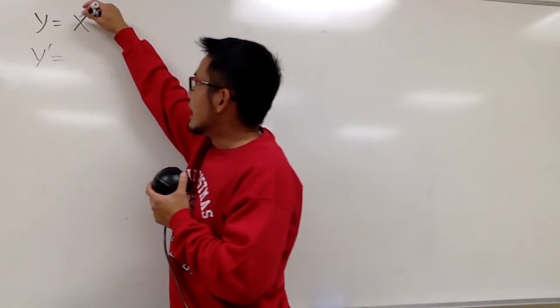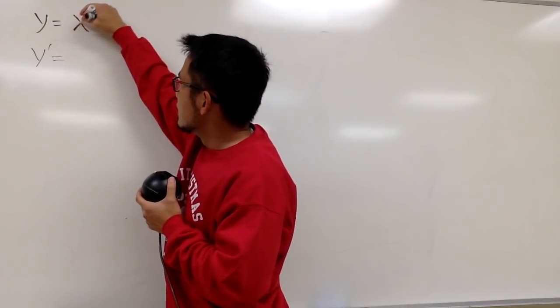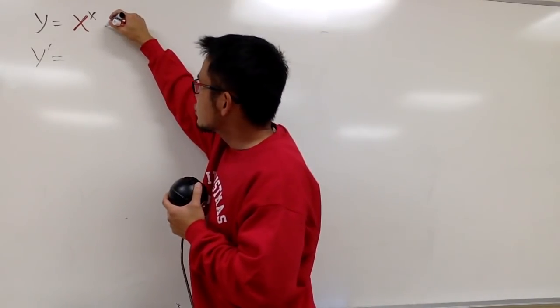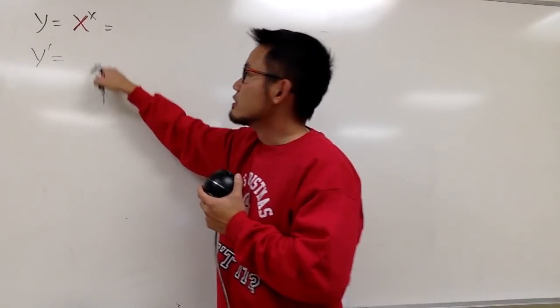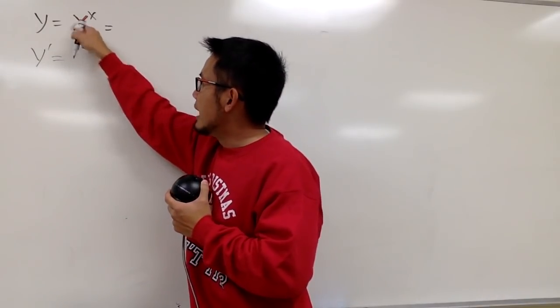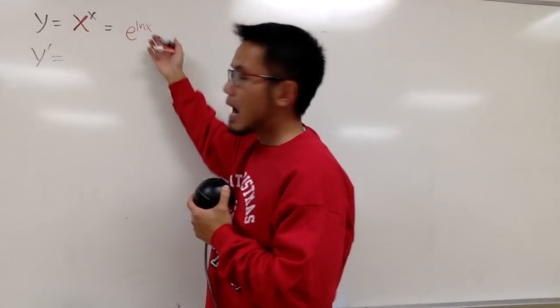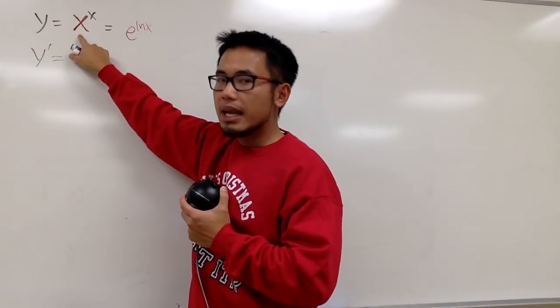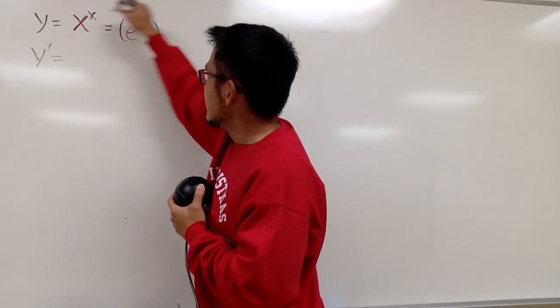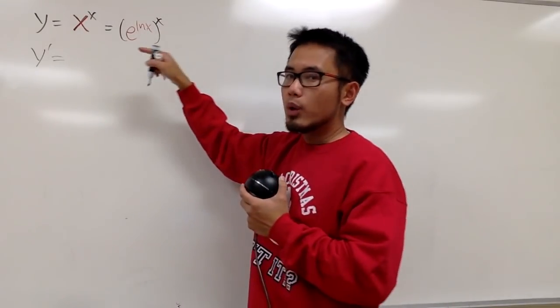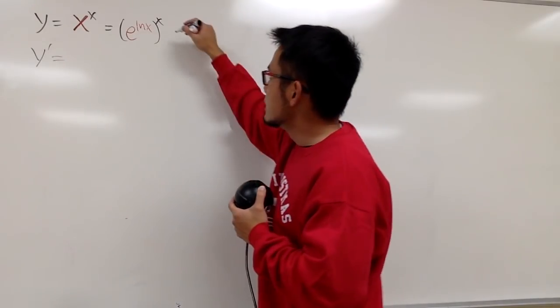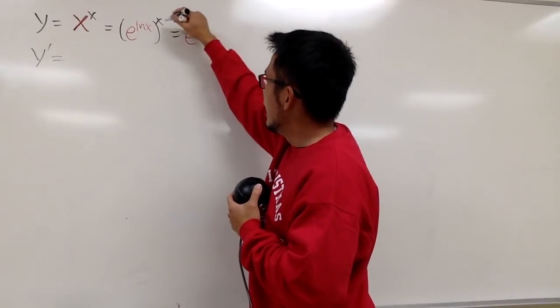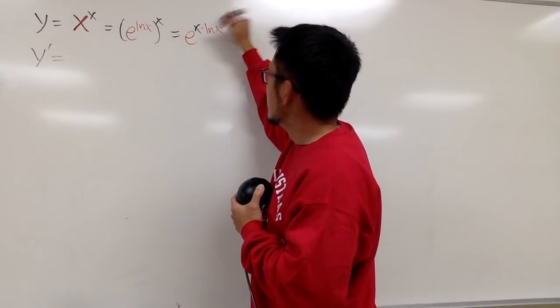The way I want to show you is that we notice the base is x, and then the power is also x. It's a function to a function situation. In this case, let's try to work with base e. So, we will rewrite the base x as e to the ln x power. e and ln cancel, this is still x. And then, we still have to take this raised to the x power. And when we have a power to a power, we can multiply the powers. That's one of the rule of exponents. So, this is e to the x times ln x.